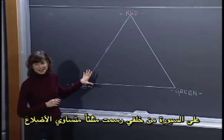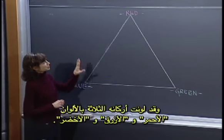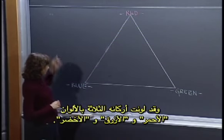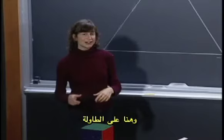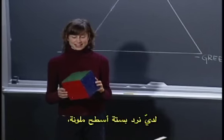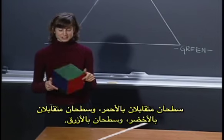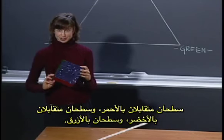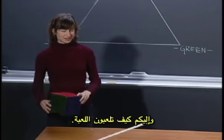On the board behind me, I have an equilateral triangle with its three vertices labeled red, blue, and green. And here on the table, I have a six-sided die with two faces colored red, two faces colored green, and two faces colored blue. Here's how you play the game.